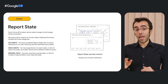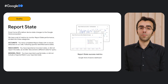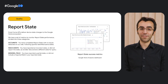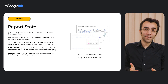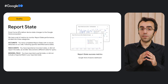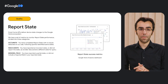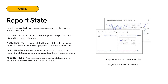A big development for us this year was the introduction of a troubleshooting pipeline for report state. As a reminder, report state is part of our smart home APIs, where you deliver the state changes from your devices to the Google Home ecosystem. We introduced a set of metrics and logs to monitor report state performance, which breaks down the results into three categories: accurate, inaccurate, or missing field.